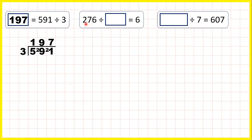Now here we have 276 divided by something equals 6. So our divisor is missing. And what we do when the divisor is missing is just divide the dividend by the quotient. So if the divisor is missing, we still use division to find the missing divisor.